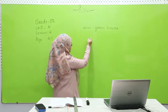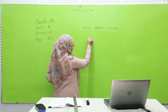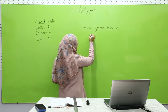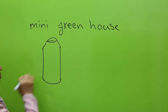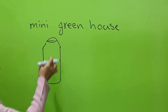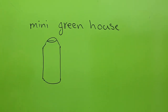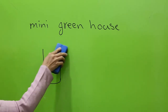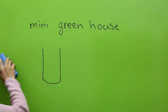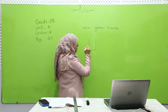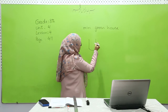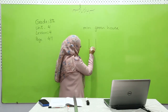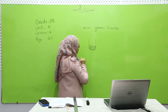This is a bottle. You may have seen some bottles. This is a plastic bottle. I can cut the cover of this bottle. Also, I can put some soil at the bottom of this bottle.